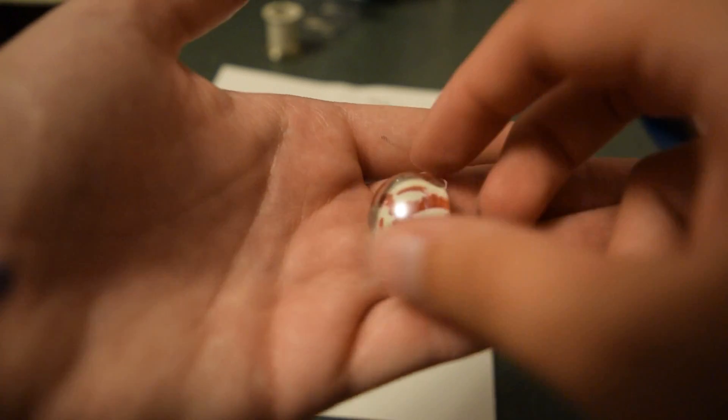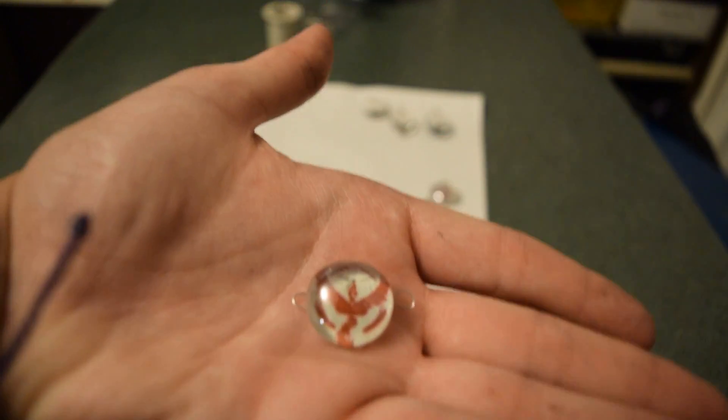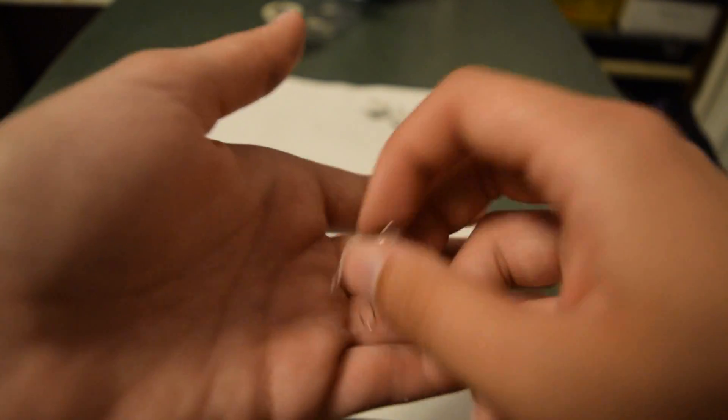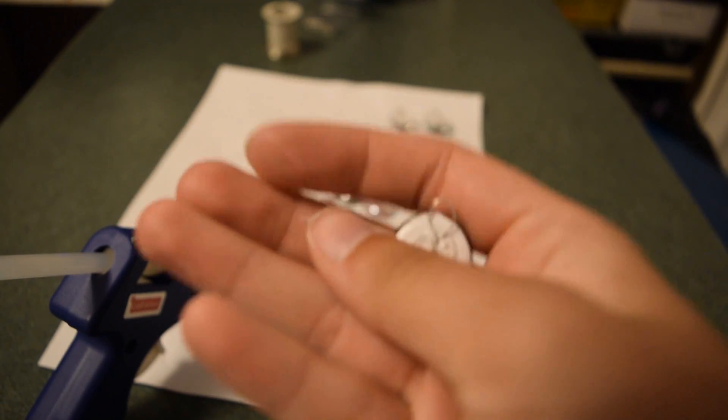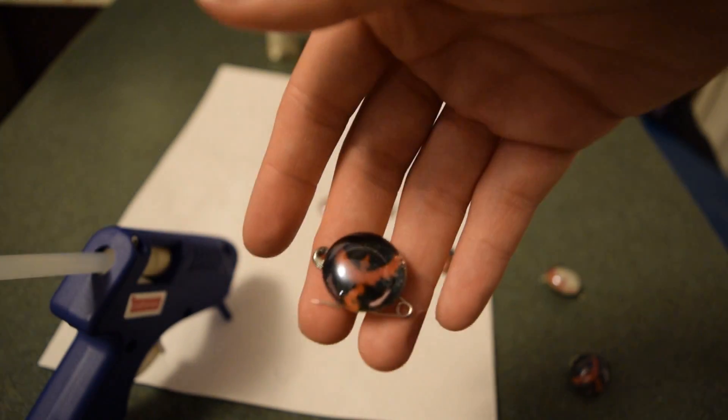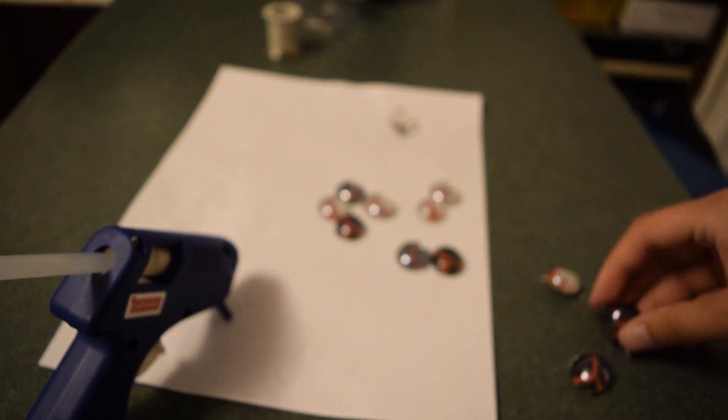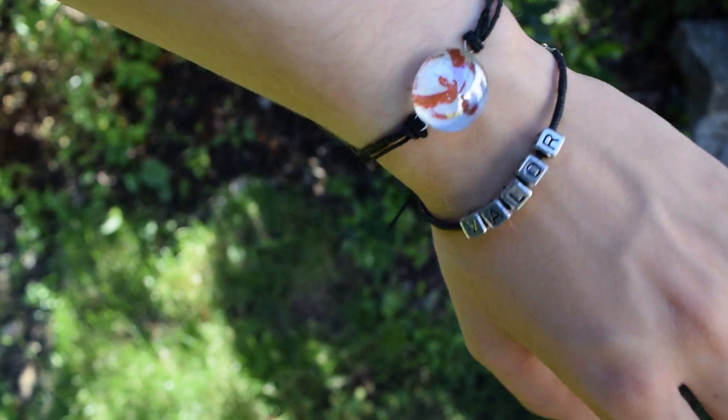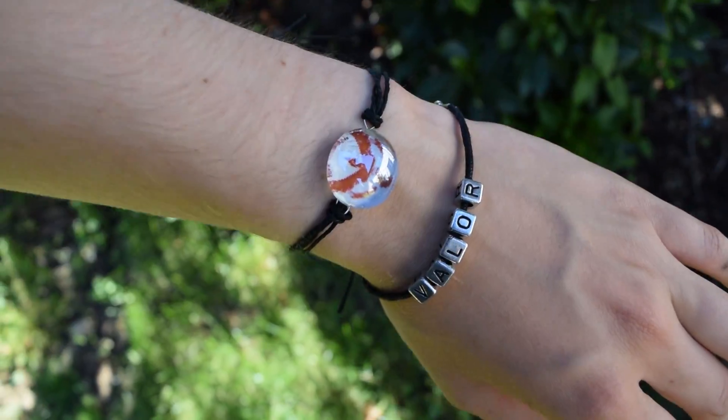I let them dry overnight before glue gunning any pins or wire to the back of my pendants. I twisted wire to make two loops to make a bracelet connector and into one loop to make a necklace pendant. I also glued safety pins onto some to make pins for my backpack. I attached thin black cotton cord to the pendants to finish my bracelet and necklace, and I really liked how they turned out.